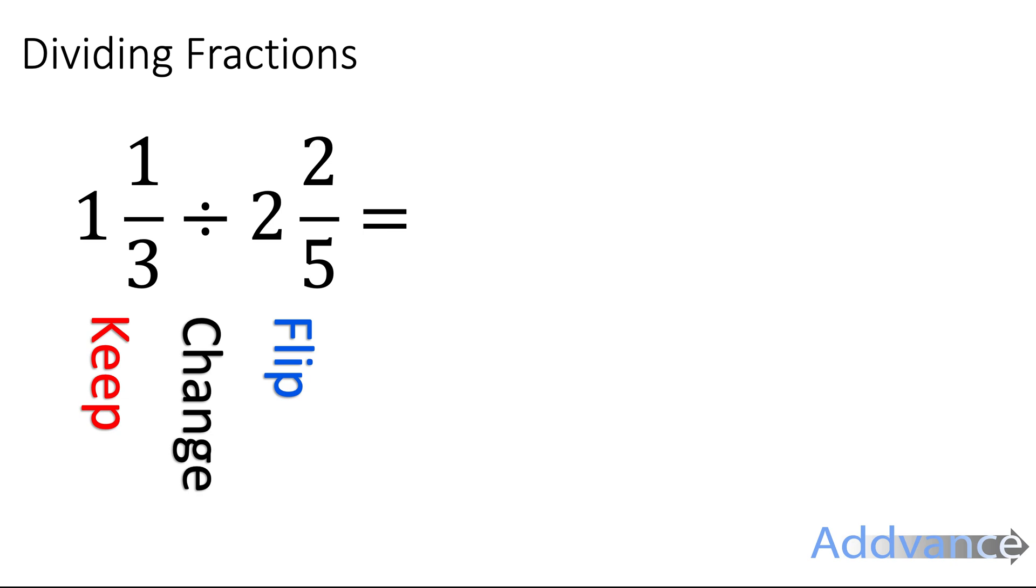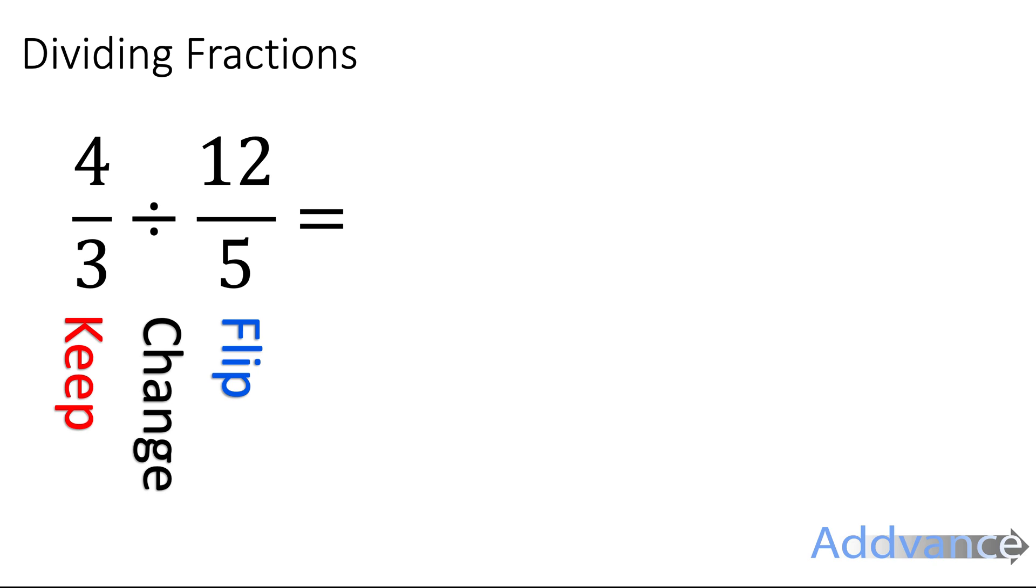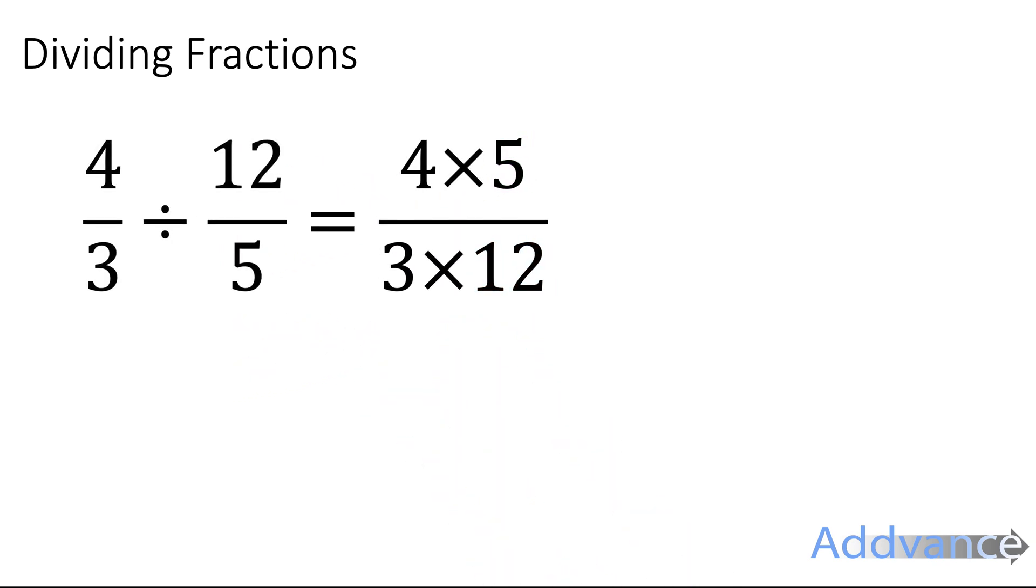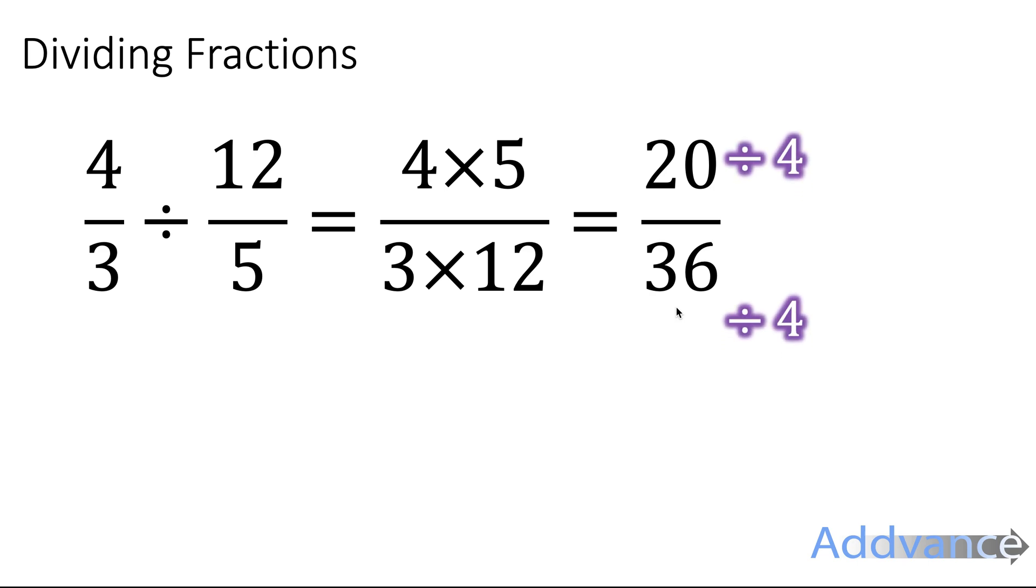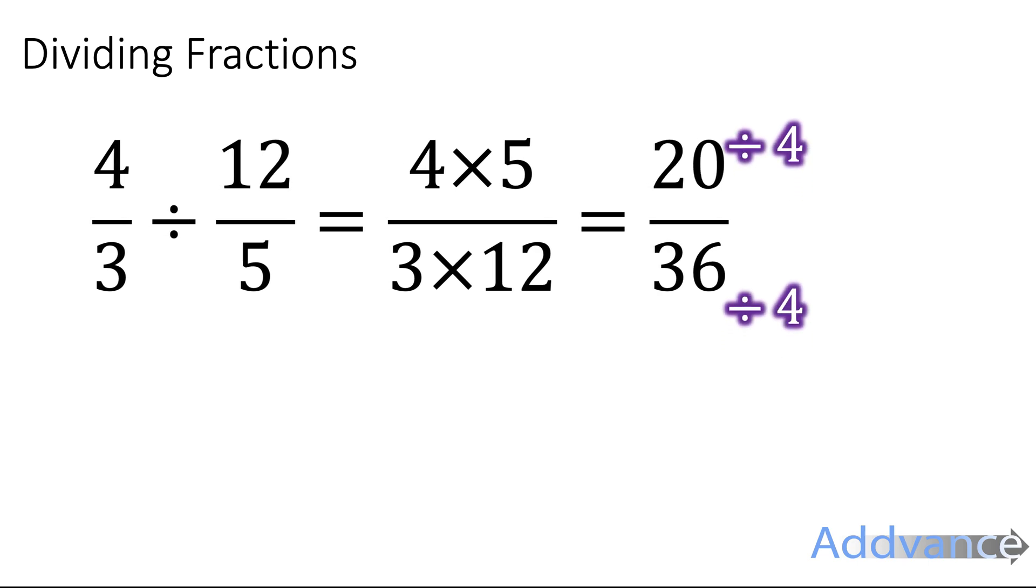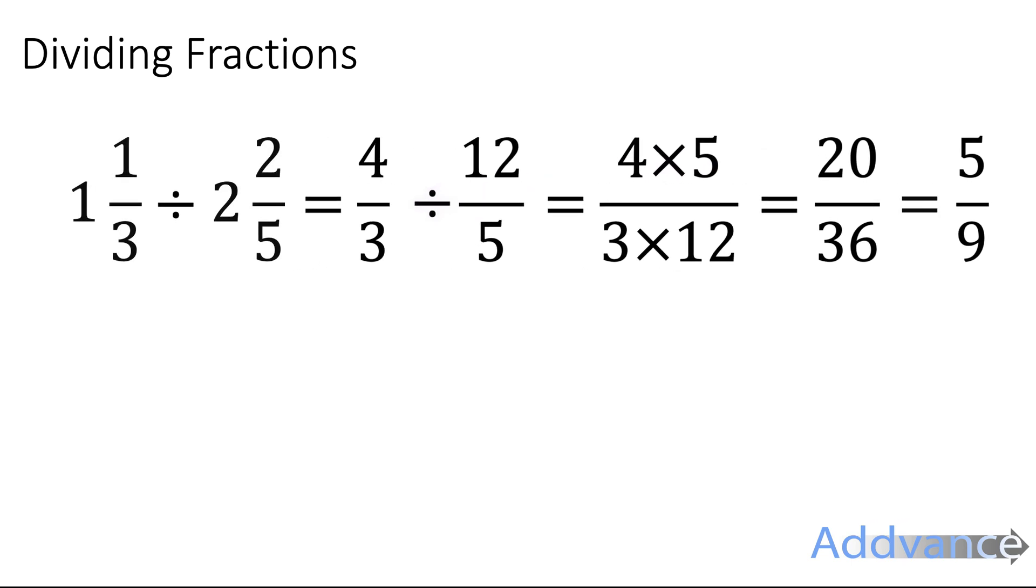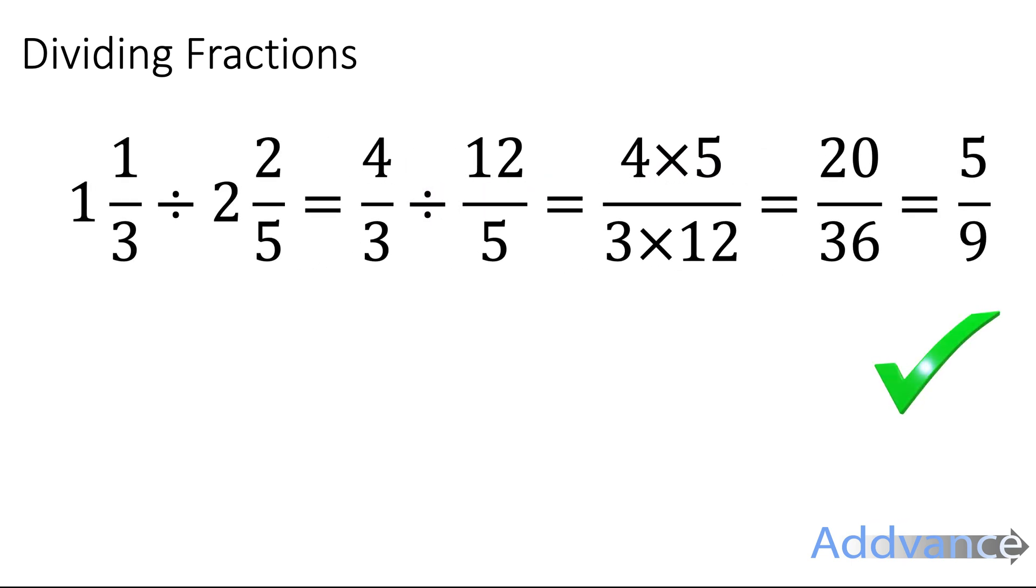Finally, let's do this one. This is 1 and 1 third divided by 2 and 2 fifths. We make it into improper fractions as we did before. We keep, we change and we flip. Multiply the top and we multiply the bottom. 4 times 5 is 20, 3 times 12 is 36. Divide by 4 and we get 5 ninths, which is the final answer.